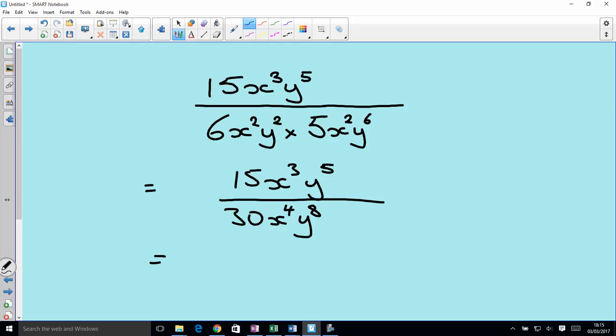Can we simplify or can we cancel at all? Yep, we can divide 15 and 30 by 15. We get 1 and 2. x cubed and x to the 4 can be divided by x cubed. So x cubed cancels out. We get 1 and x to the 4 divided by x cubed is x. And y to the 5 divided by y to the 8 can be divided by y to the 5, which cancels that out. And we are left here with y cubed on bottom. So on the top, we've got 1 times 1 times 1, which is 1.